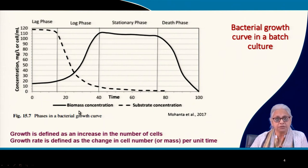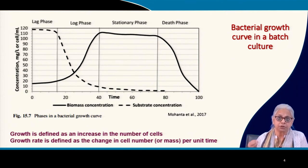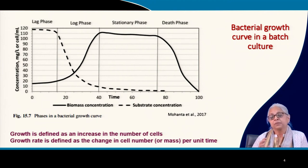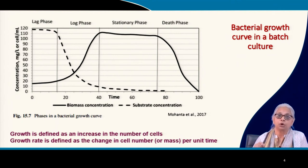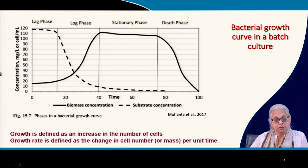You have two curves: one is the biomass and the second is the substrate. Concentration can be measured as volatile suspended solids or as number of cells per ml. If measuring by microscopy, you get total cell count; if using plate counts, you measure the number of living or reproducing cells.